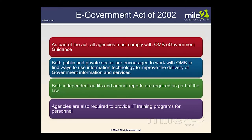As part of the E-Government Act of 2002, all agencies must comply with OMB e-Government guidance. Both public and private sectors are encouraged to work with OMB to use information technology to improve delivery of government information and services. Both independent audits and yearly annual reports are required, and agencies are also required to provide IT training programs for their personnel.